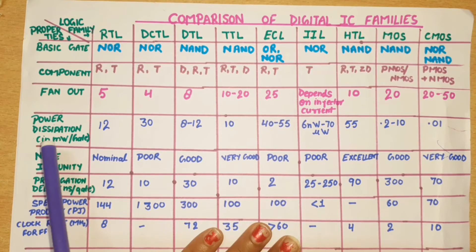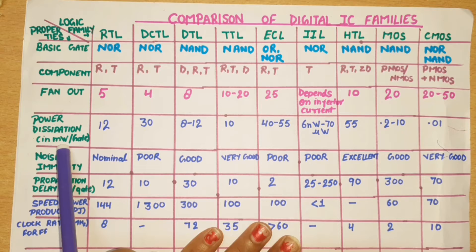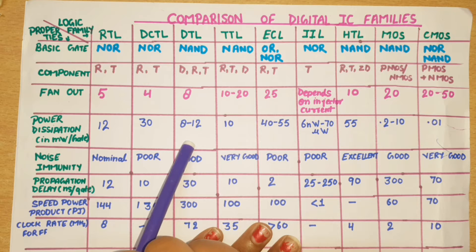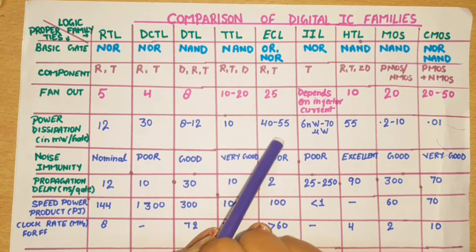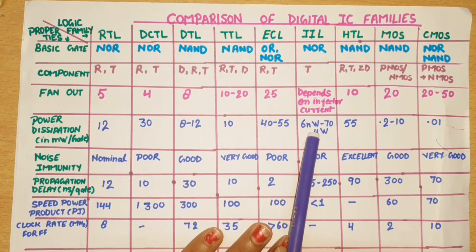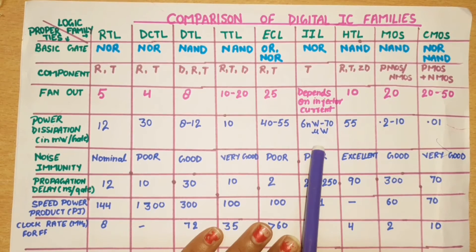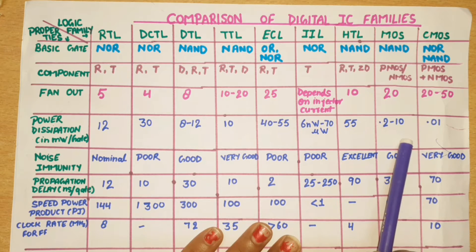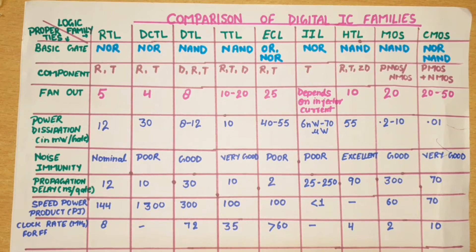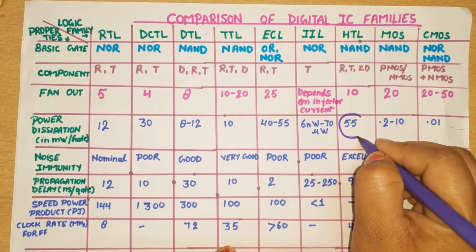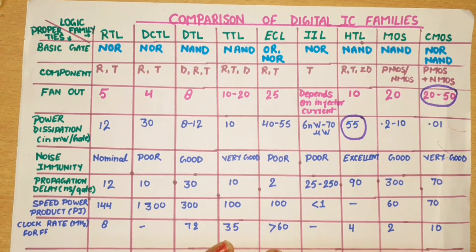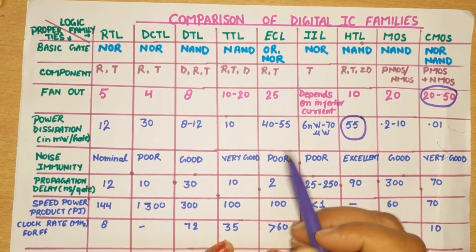Now power dissipation, given in milliwatt per gate. RTL is 12 milliwatt, DCTL is 30, DTL is 8 to 12, TTL is 10, and ECL is 42 to 55. I2L ranges from 6 nanowatt to 70 microwatt. The highest power dissipation is ECL. The highest fan-out is CMOS. TTL power dissipation ranges 10 to 20 because there are 3 to 4 types.